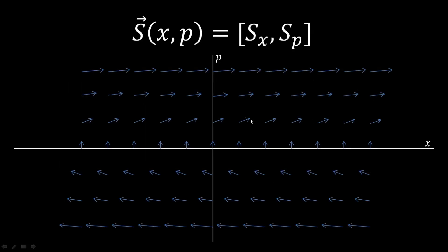What sx and sp are is basically the components of a field — a vector field defined in phase space. So for any point in phase space, we're going to have a vector with components sx and sp.